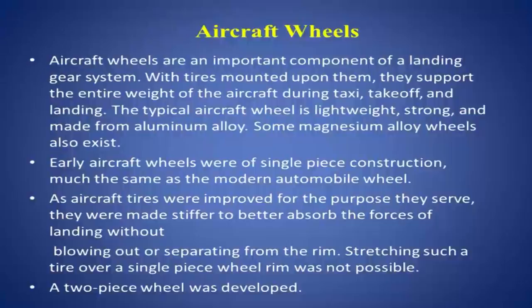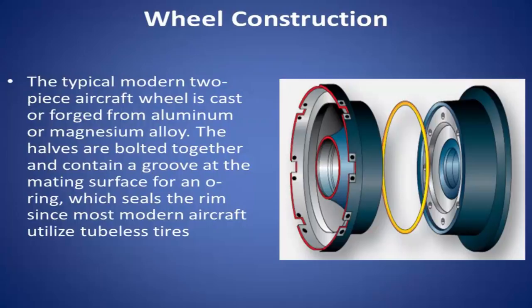As you can see in the diagram, the wheel is constructed in two halves. This modern two-piece aircraft wheel is generally made by casting or forging from aluminium alloys or magnesium alloy. These wheel halves are bolted together and contain a groove at the mating surface. At the groove, there is an O-ring which seals the rim, since most modern aircraft utilise tubeless tyres. In the diagram, you can see a yellow-coloured O-ring in between; this O-ring fits into the groove at the mating surface for sealing.